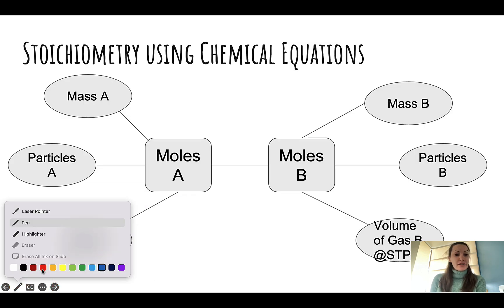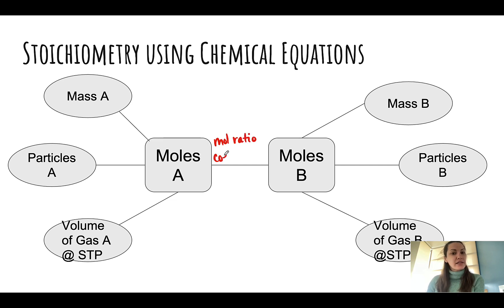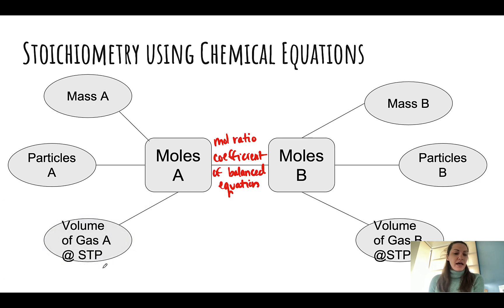So the next thing that we're going to do is expand upon the mole maps that we've seen before. What's new is this bridge connector here. This is going to be called a mole ratio, and what it is, is the coefficient — or the numbers in front — of a balanced equation. That's going to help us convert from moles of one substance, in this case labeled A, to moles of another substance, in this case labeled B. We've already talked about the relationships that are otherwise on this, but let's go through them just in case.